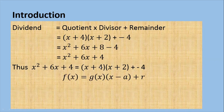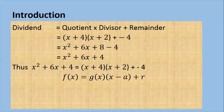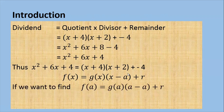x plus 4 is another function, let's call it g of x. x plus 2, we can write it as x minus a, and minus 4 is the remainder, that is r. Now suppose that we want to find f of a. Well, f of a will be g of a multiplied by a minus a plus r. But a minus a is 0, therefore f of a equals r.